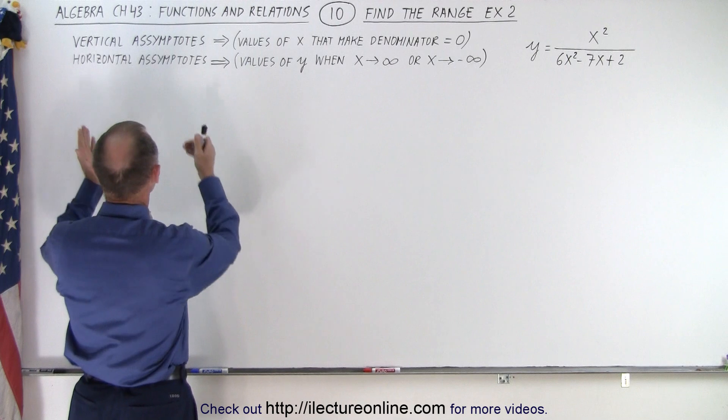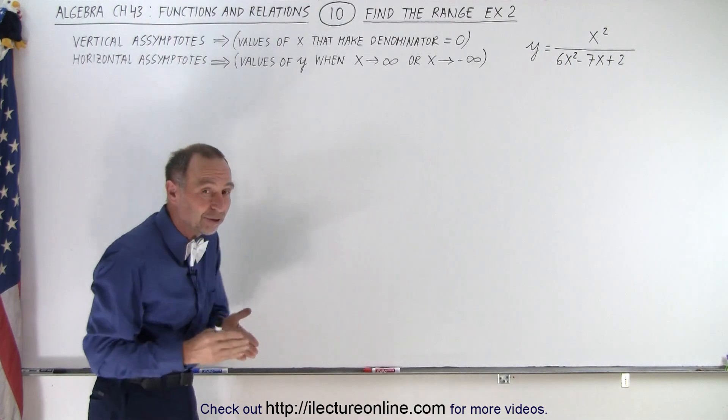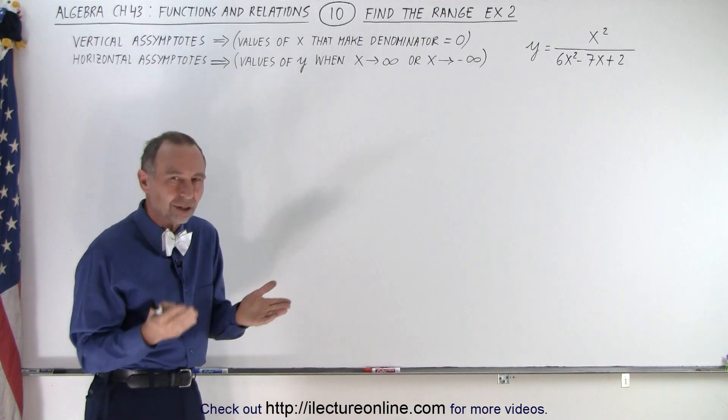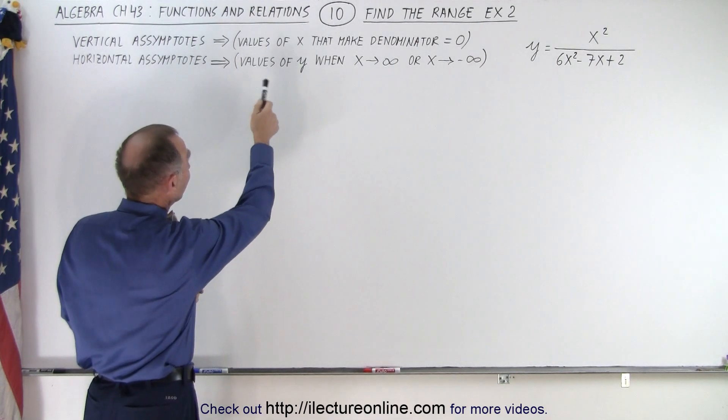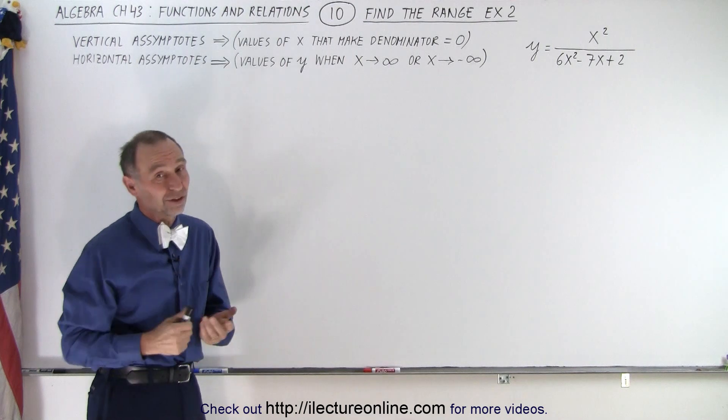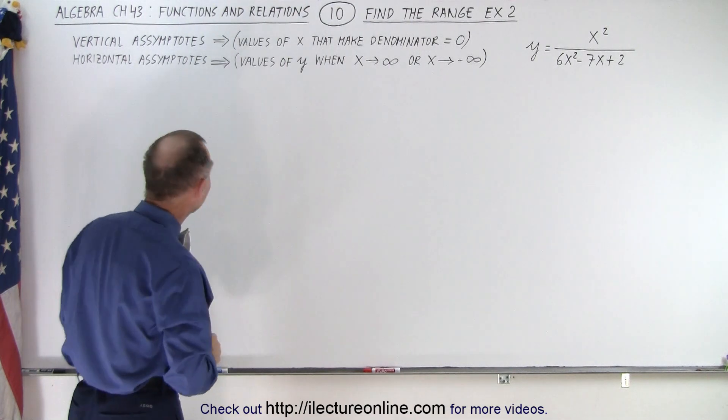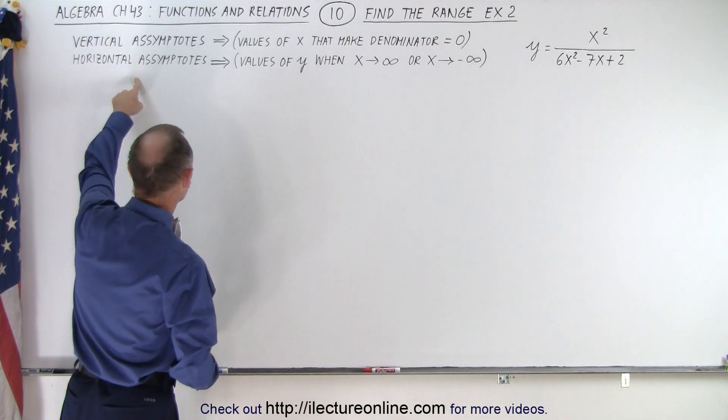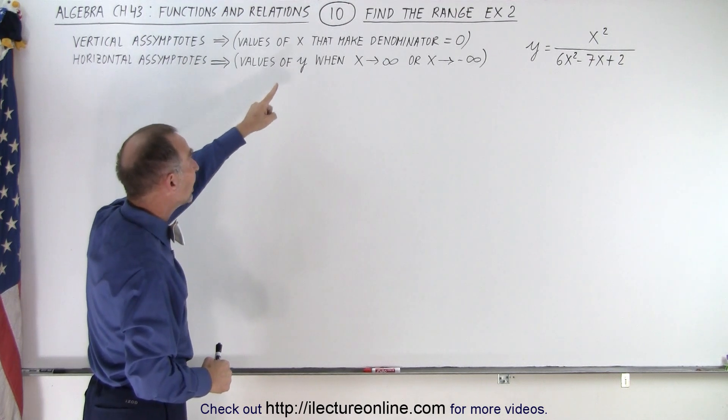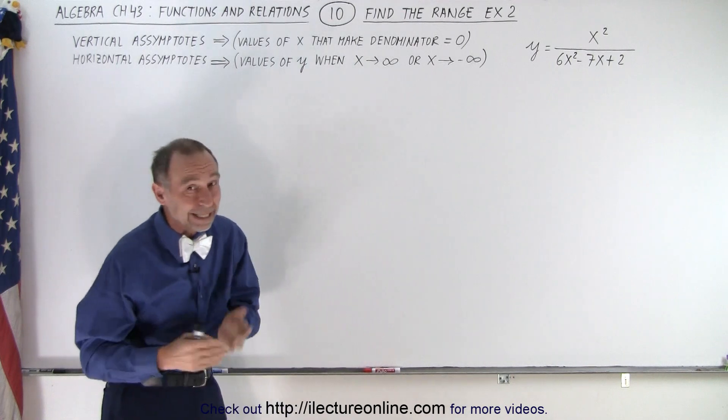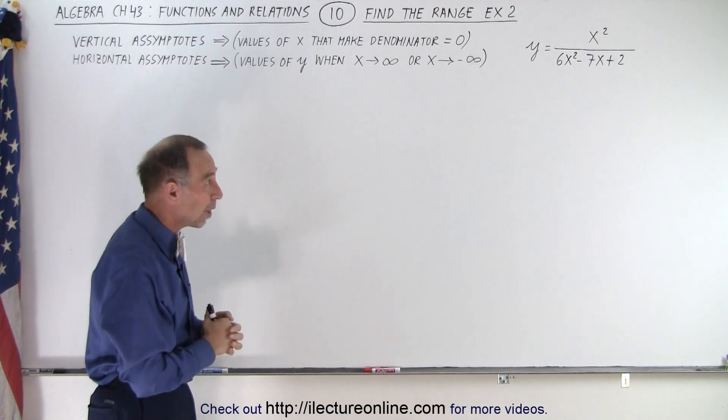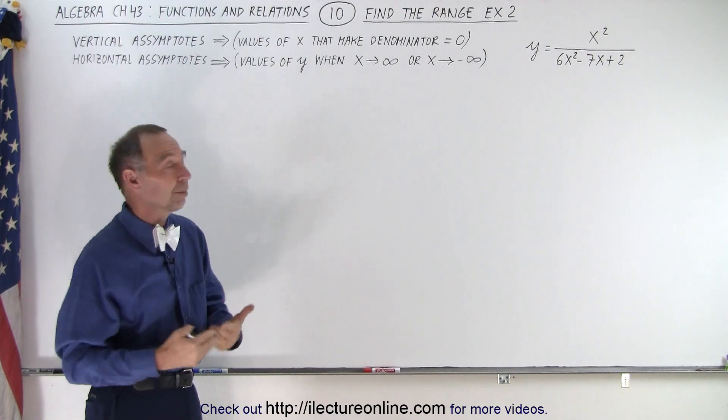The concept is we need to find the asymptotes. We have vertical asymptotes and horizontal asymptotes. To find the vertical asymptotes, you find all the values of x that make the denominator zero, which in this case there will be two of those. And then to find the horizontal asymptotes, you find all the values for y when x approaches infinity or x approaches negative infinity. In this case, you'll get the same value for y. But that's how you want to approach it.